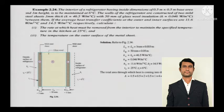The walls of the refrigerator are constructed of two mild steel sheets, 3 mm thick, K equals 46.5 watts per meter degree Celsius with 50 mm of glass wool insulation between them, K equals 0.046 watts per meter degree Celsius. The average heat transfer coefficients at the outer and inner surfaces are 11.6 watts per meter square degree Celsius and 14.5 watts per meter square degree Celsius respectively.